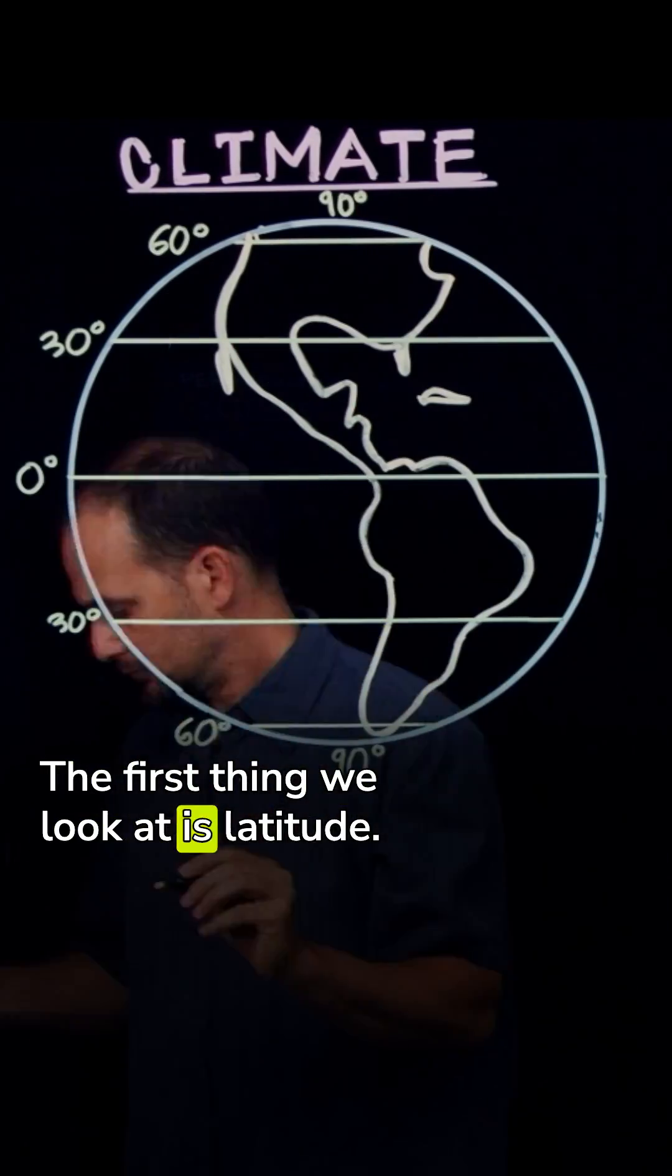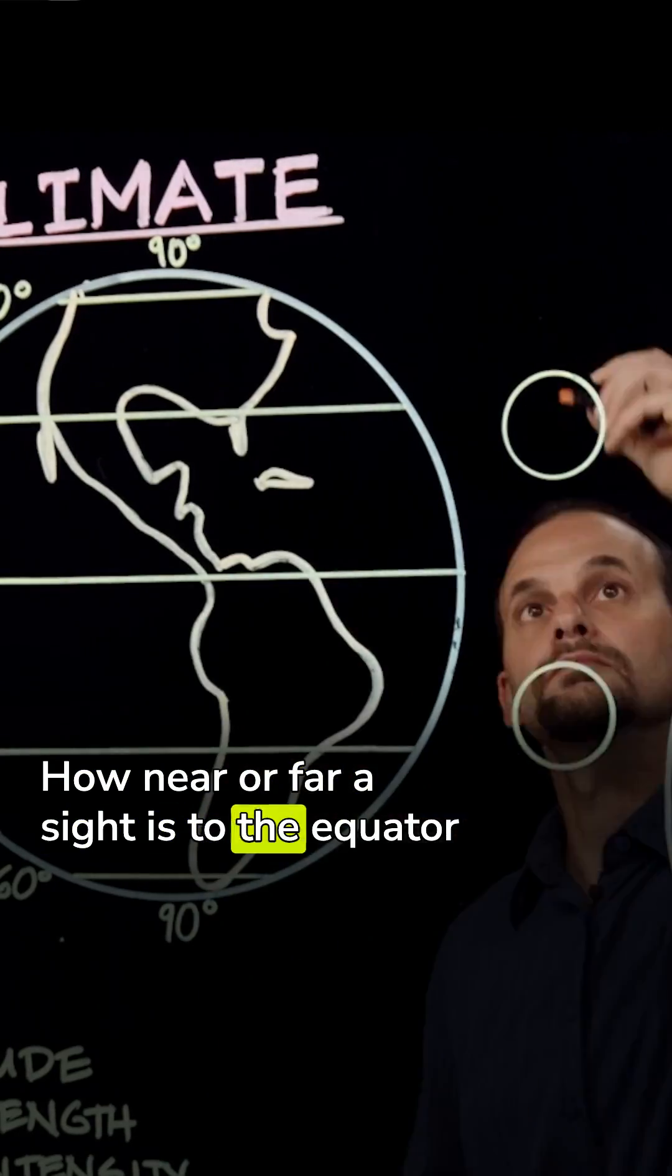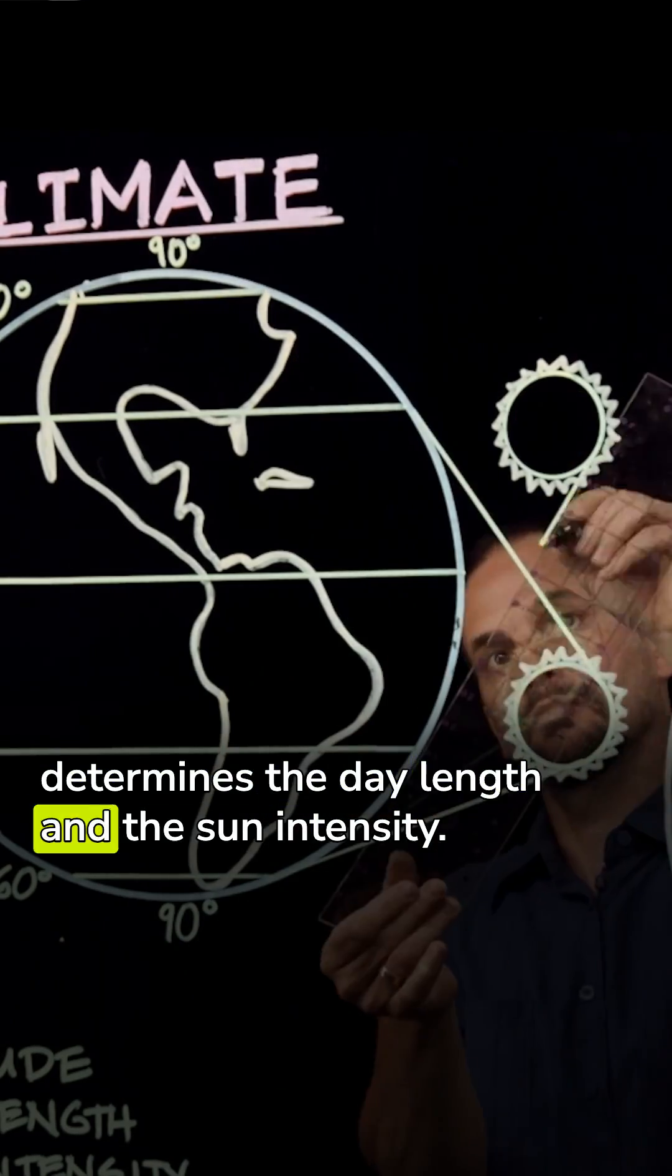The first thing we look at is latitude. How near or far a site is to the equator determines the day length and the sun intensity.